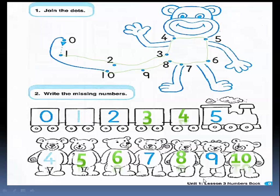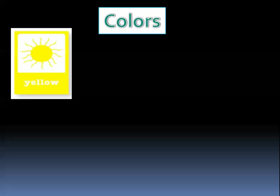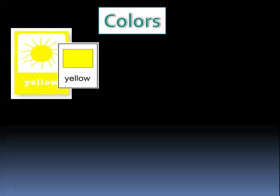Now we are going to talk about the colors. Do you remember the colors? What colors do we have? We have this color — this is a sun. What color is the sun? The sun is yellow. Do you remember the color yellow? This is the color yellow.